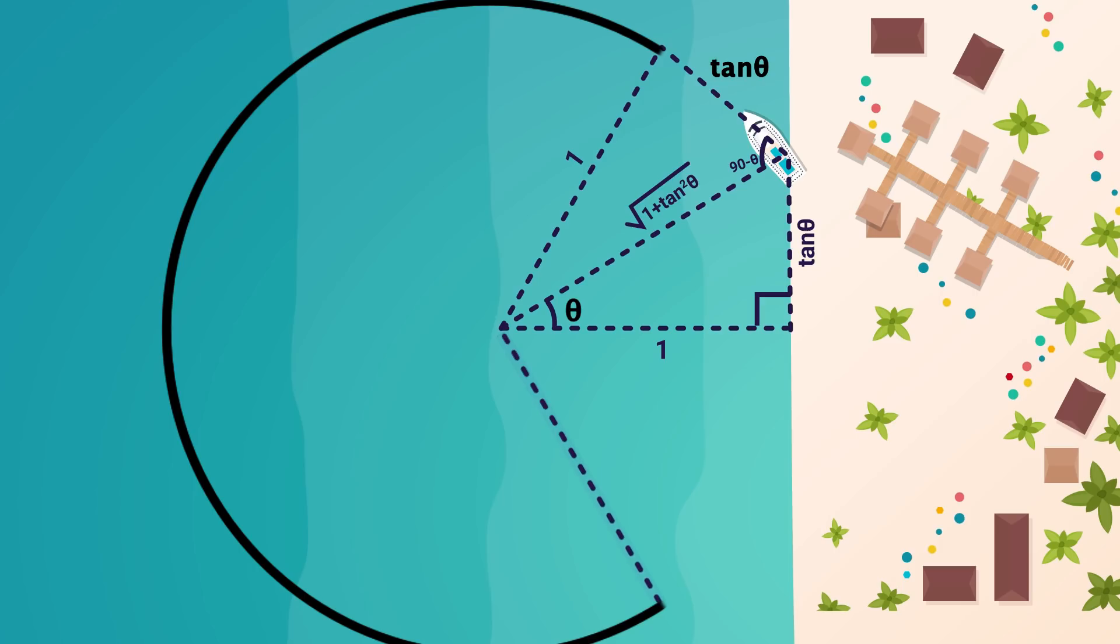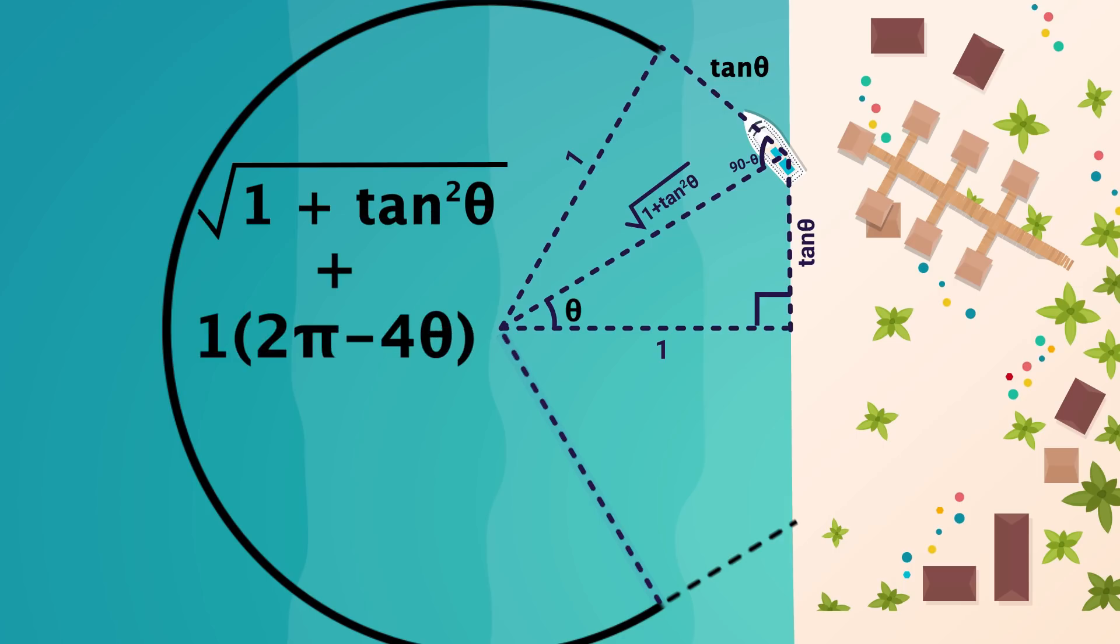And lastly, the fourth step is to drive in a straight-line path tangent to that circle until you hit the shore. So in total we've got that first path of root 1 plus tan squared. We've got the arc, which will be r, or 1, times 2 pi minus 4 theta. This entire angle here is 4 theta, so 2 pi minus that corresponds to the angle of the arc. And then we've got two paths of length tan theta.